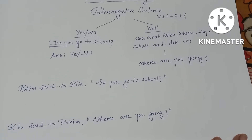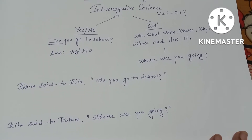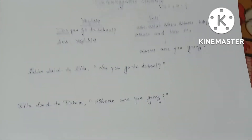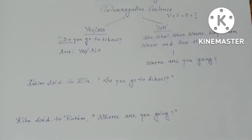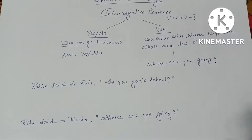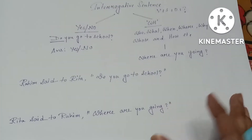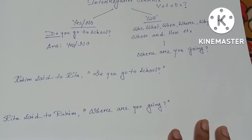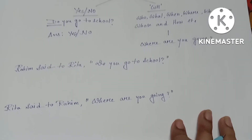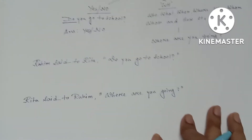For example: 'Where are you going?' Here we can give the answer in a full sentence, but the question starts with the WH word 'where.' Now let's see how we can change these direct interrogative sentences into indirect interrogative sentences.